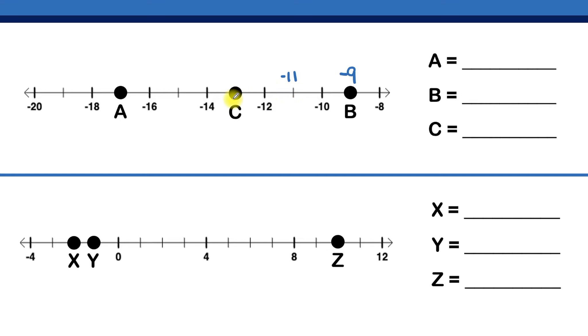which means this here would be negative 13, followed by negative 14, then negative 15, then negative 16, then negative 17.